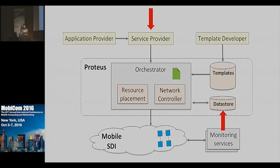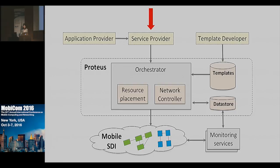Monitoring services are plugged into Proteus so we can get the current state of the SDI. Based on that, Proteus uses the resource placement module to find the particular set of resources that can satisfy the constraints of the service instance. We also have a network controller used for SDN flow installation and other network setup. Service providers can then interact with instantiated services through a service management interface.